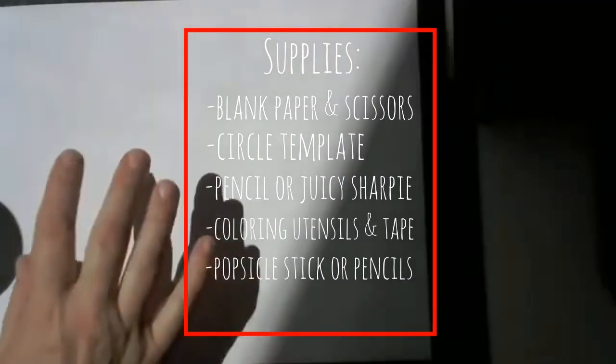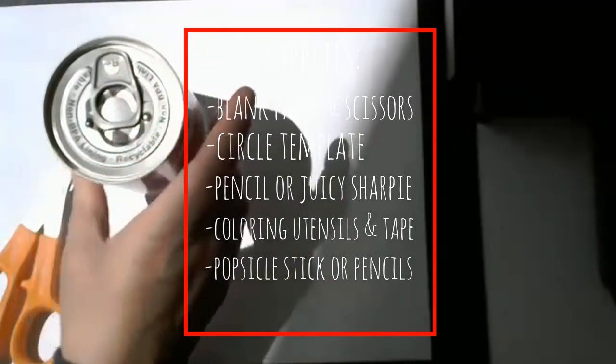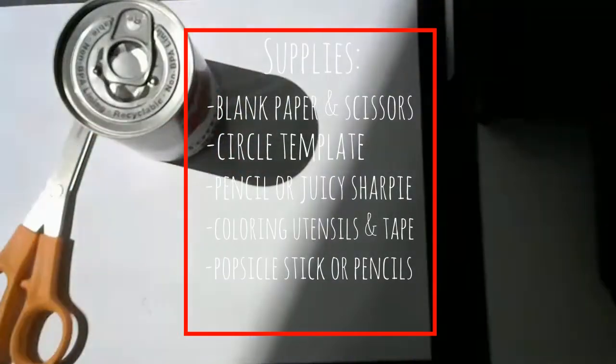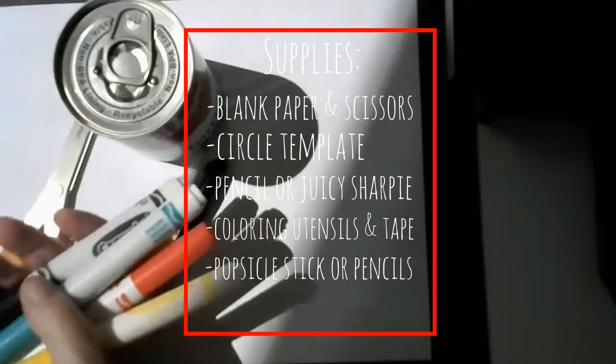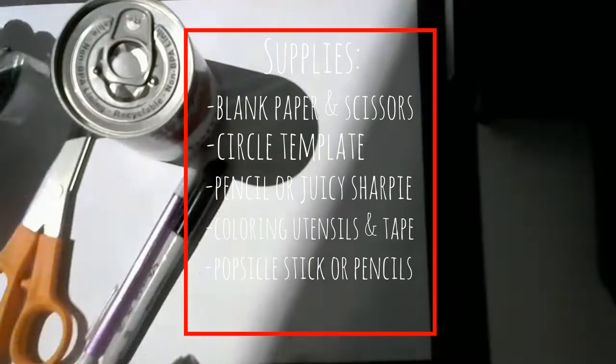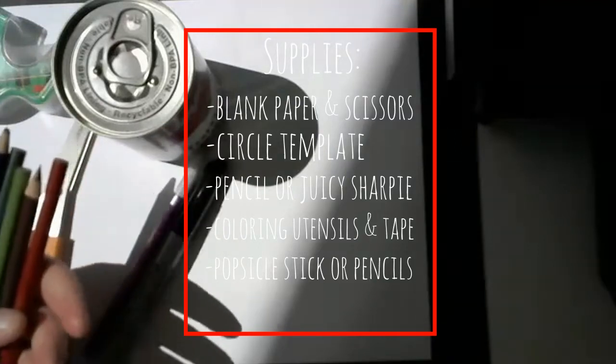For supplies today you'll need paper, scissors, a circle template - I'm using a soup can - pencil or juicy sharpie, some coloring utensils like markers, tape, and some sort of stick like a popsicle stick or old pencils.